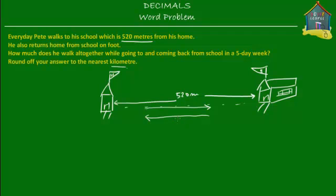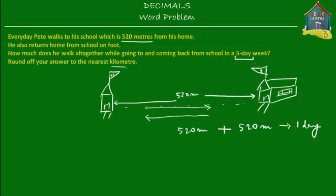Altogether in one day he walks 520 meters going to school, plus 520 meters coming back from school. So altogether this is 520 meters plus 520 meters in one day. We have to find out how much he walks in the whole week, which is five days long.